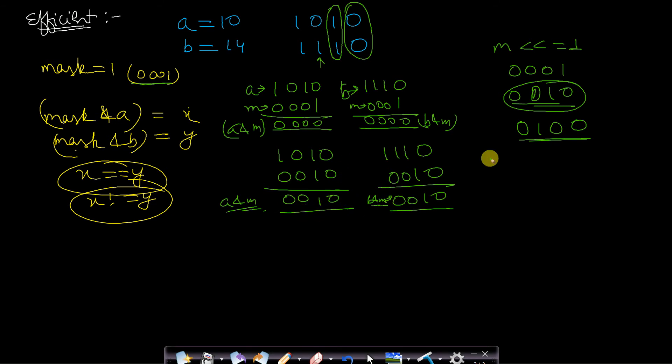Now we will perform the same operation by using this mask value. A is 1010, mask is 0100. A ANDed with mask will be 0000, all zeros. Now you have B as 1110 and mask as 0100. Its value will be 0100. You can see that A ANDed with mask is not equal to B ANDed with mask. This means that the current bit which we are looking at is different in both the numbers.